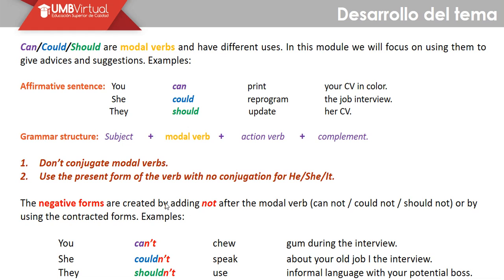Something very important: regardless of the subject — even third person — we do not conjugate these modal verbs. Use the present base form of the verb with no conjugation for he, she, or it. For negative forms, add 'not' after the modal verb: cannot, could not, should not — or by using contractions: can't, couldn't, shouldn't. Examples: 'You can't chew gum during the interview.' 'She couldn't speak about your goals in the interview.' 'They shouldn't use informal language with your potential boss.'